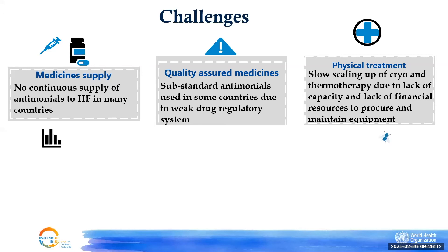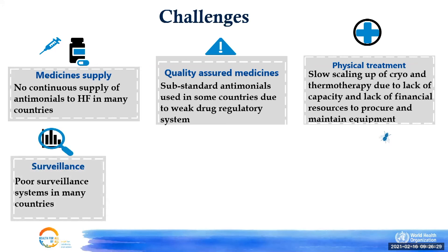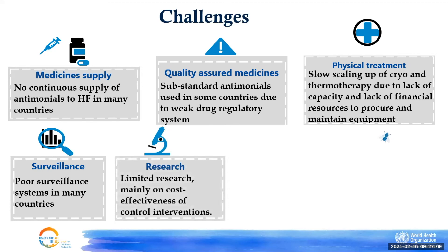Poor surveillance is another challenge. In most countries, leishmaniasis surveillance is a standalone programme not well integrated into the national health information system. It is estimated that this region reports about 200,000 or more cases annually, but the actual caseload is likely two to three times higher due to poor surveillance and underreporting at the regional and global level.